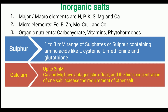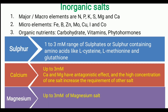Calcium is added up to 3 millimolar. Generally, calcium and magnesium have an antagonistic effect, and a high concentration of one salt necessitates an increased amount of the other. Magnesium is also added up to 3 millimolar, and we have to consider the concentration of calcium before adding magnesium in the nutrient solution.